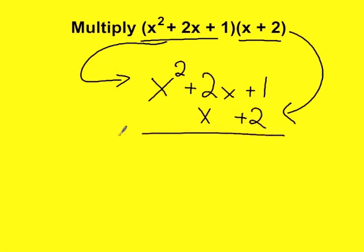If you like multiplying the traditional way, this will be the best method for you. So we take 2 times 1. 2 times 1 is 2. 2 times 2x, multiply the 2's, which is 4. There's only 1x, so I just keep the x.